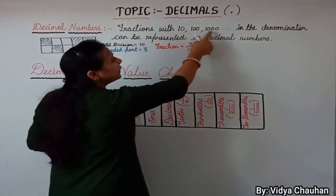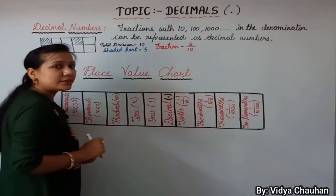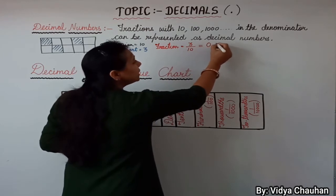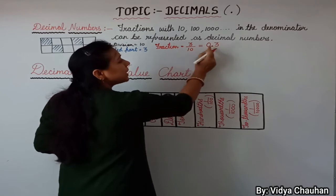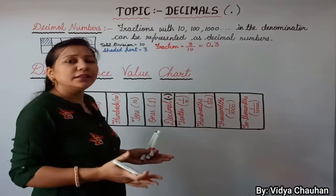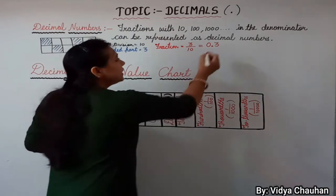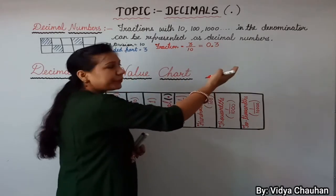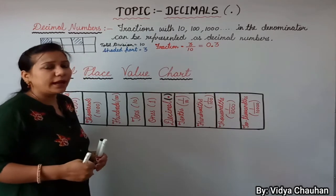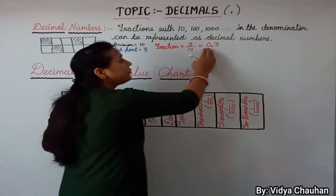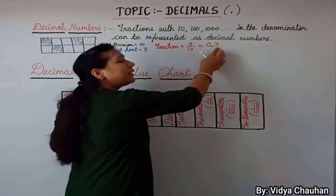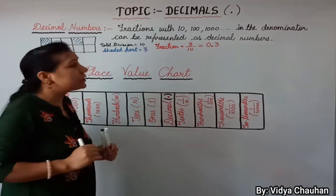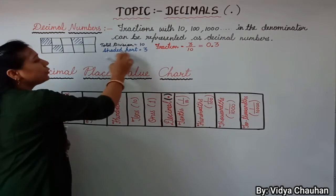According to our definition, fractions with ten, hundred, and thousand in the denominator can be represented as decimal numbers. So in decimal form, 3 upon 10 is written as 0.3. This point separating the two parts is called decimal — in mathematical terms we call it decimal, and in common language we call it point. So 0.3 can be read as 'zero point three.'